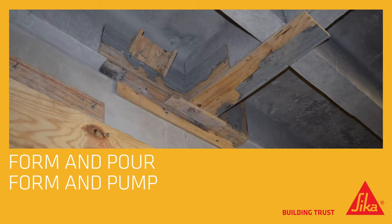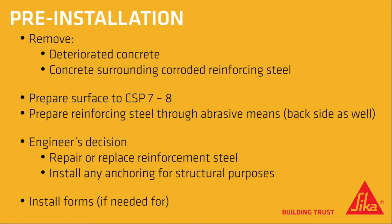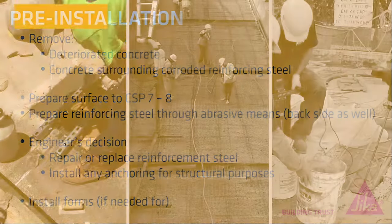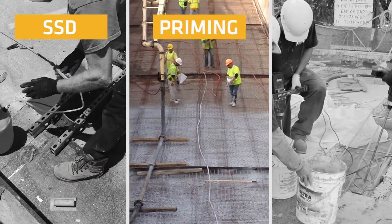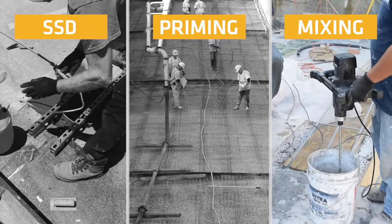For form and pour and form and pump applications, pre-installation is important. Remove all deteriorated concrete, including from behind reinforcing steel. Prepare concrete surfaces to surface profile 7 or 8 and clean all sides of reinforcing steel. Repair or replace reinforcing steel and install any necessary anchoring. Install forms if needed. If using a scrub coat, pre-wet the repair area to saturated surface dry, apply the chosen bonding agent per manufacturer instructions, and mix the repair material with a low-speed drill and a mortar mixing paddle.